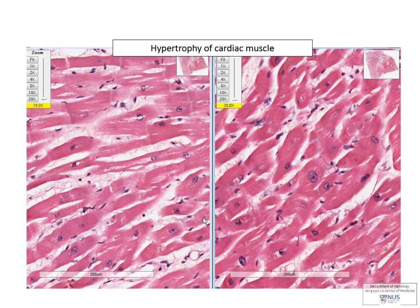This is a microscopic example showing you what the actual cells look like in hypertrophy. This is the heart muscle. The normal heart muscle, you can see that the cells are quite elongated and have parallel borders and the nuclei are relatively small. However, in the hypertrophied heart muscle, the whole cell is larger. The nucleus itself is also a lot larger.